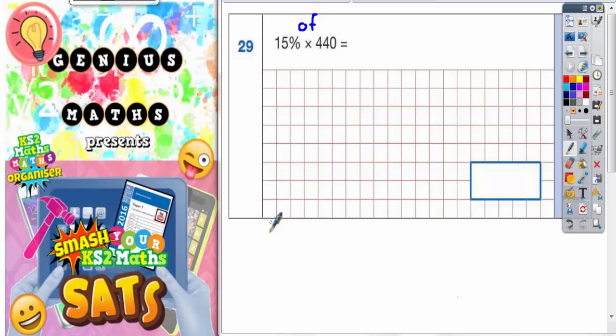So easiest thing to do first is to find 10%. Well, 10% of 440 will be the same as knocking the 0 off, or in other words, divided by 10. So 440 by 10 is going to give you 44, and then 5% is going to be half of this. So if 10% is 44, 5% is half of 44, and half of 44 is 22.